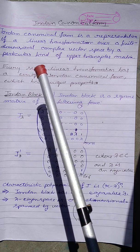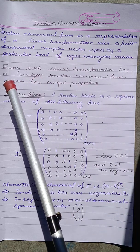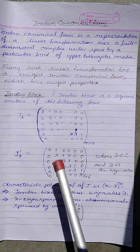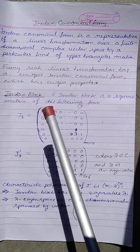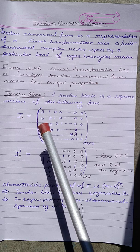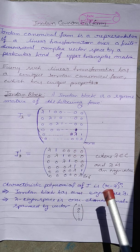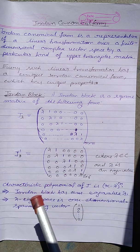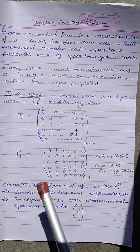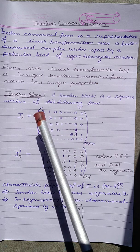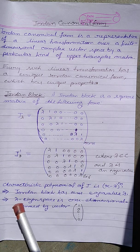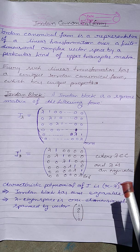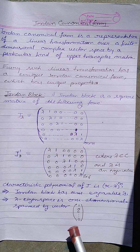Every such linear transformation has a unique Jordan canonical form. The characteristic equation of the Jordan canonical form — because every element in the diagonal is the same — is (x − λ)^n, if the order of the matrix is n×n. If the Jordan block has one eigenvalue of order n, then the λ-eigenspace is one-dimensional, spanned by the vector (1, 0, 0, …).